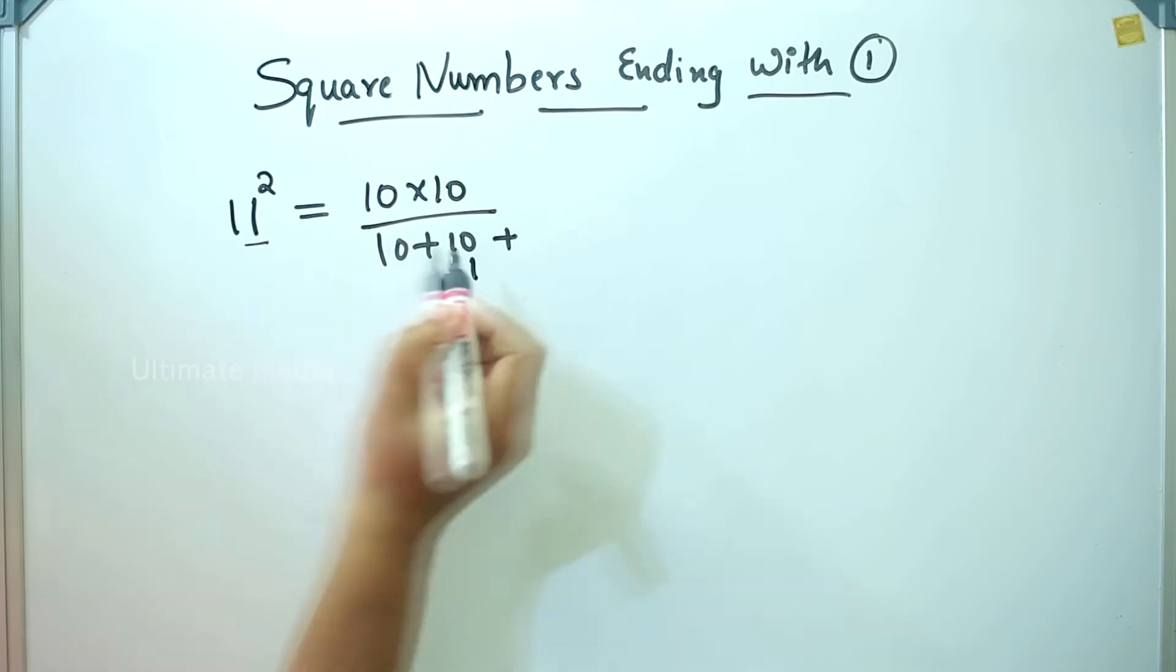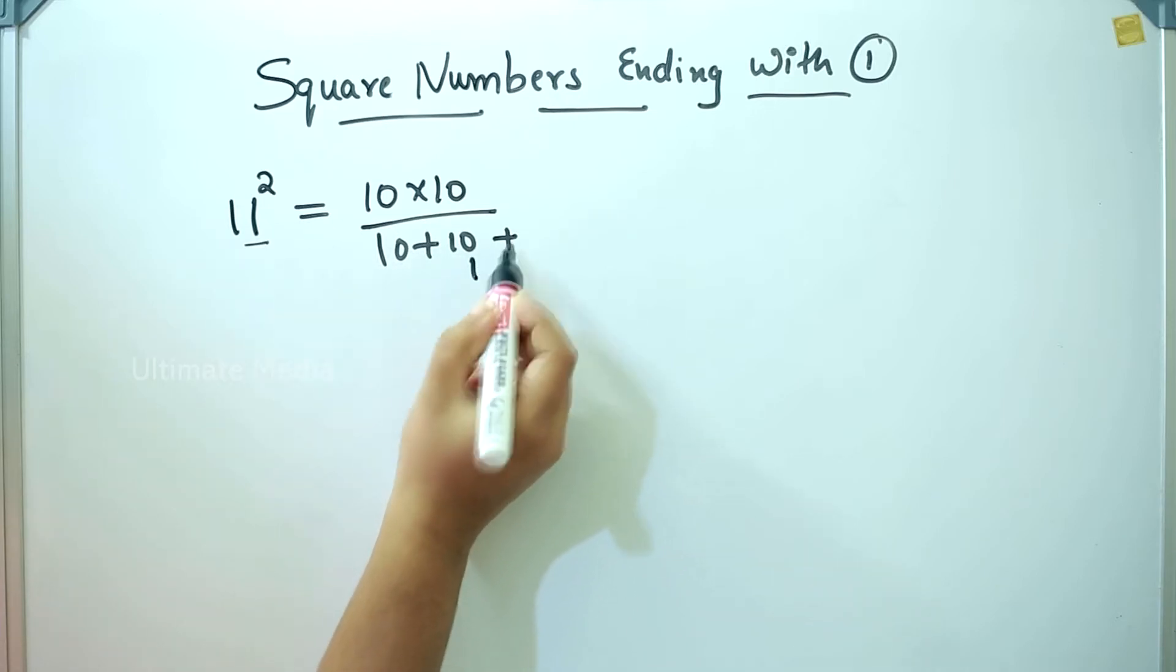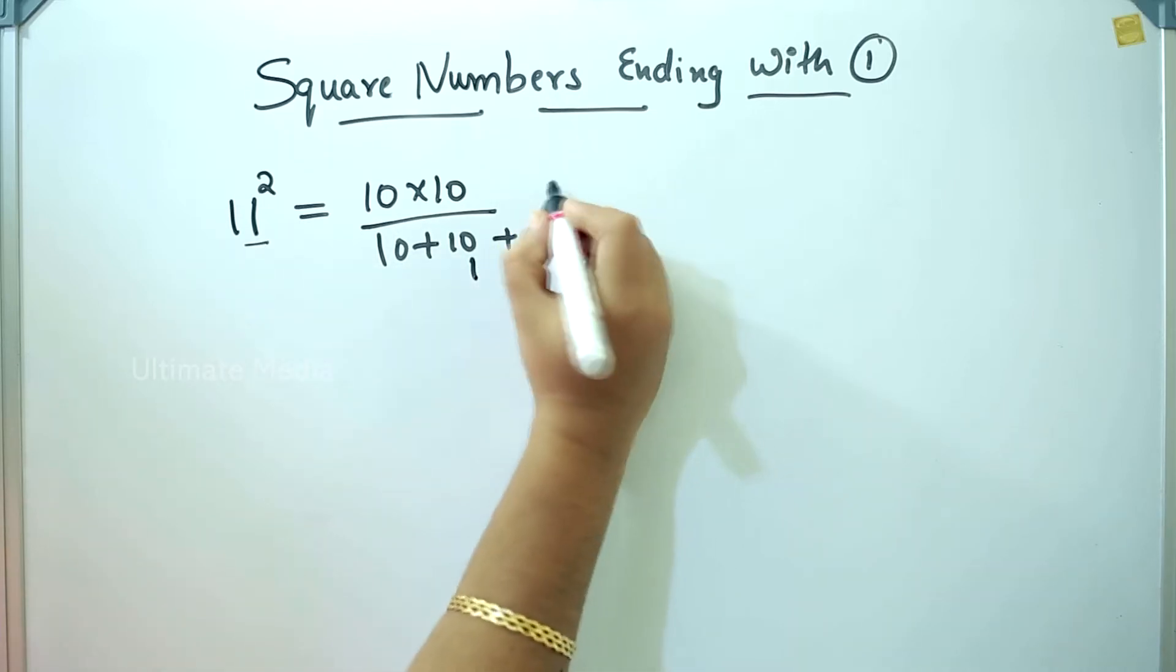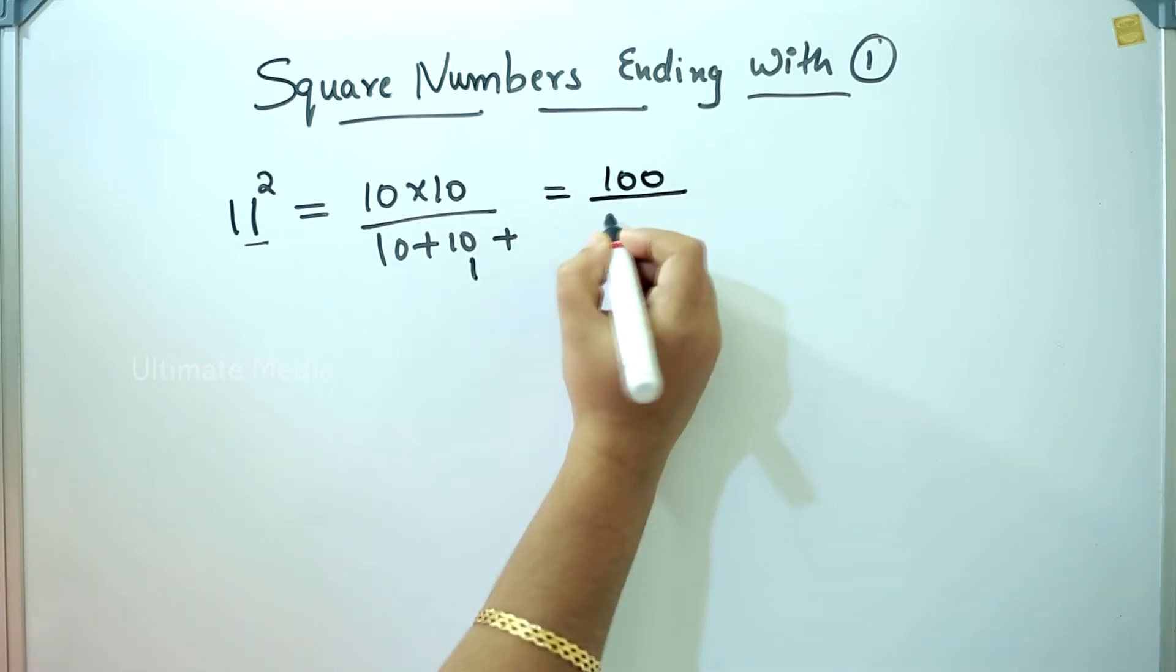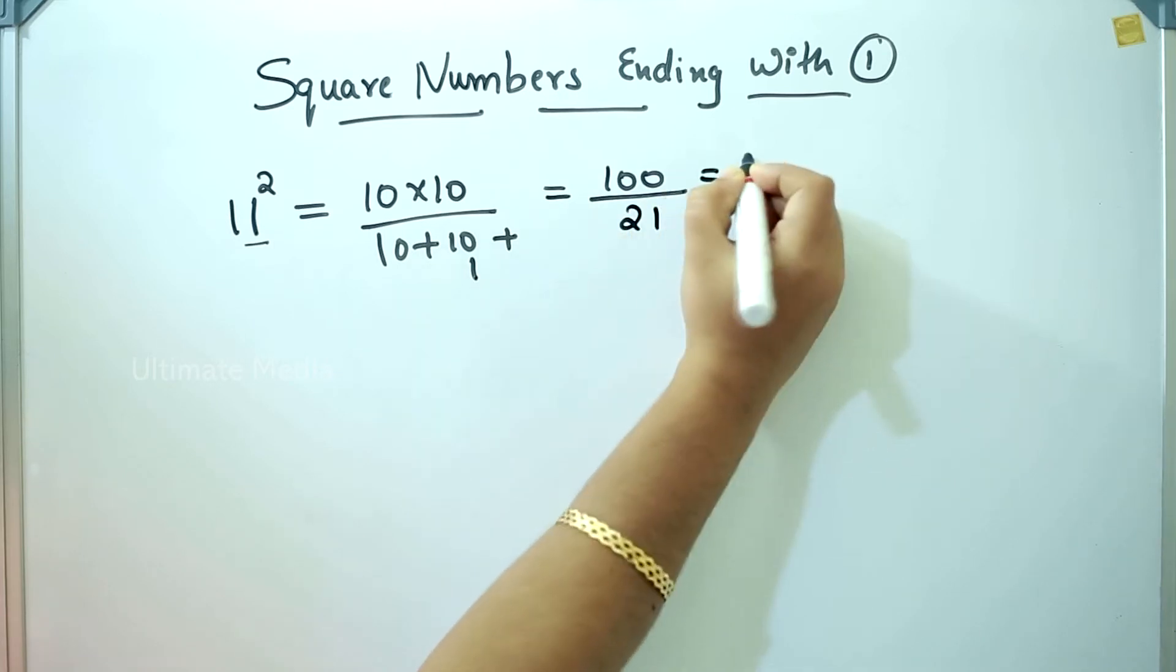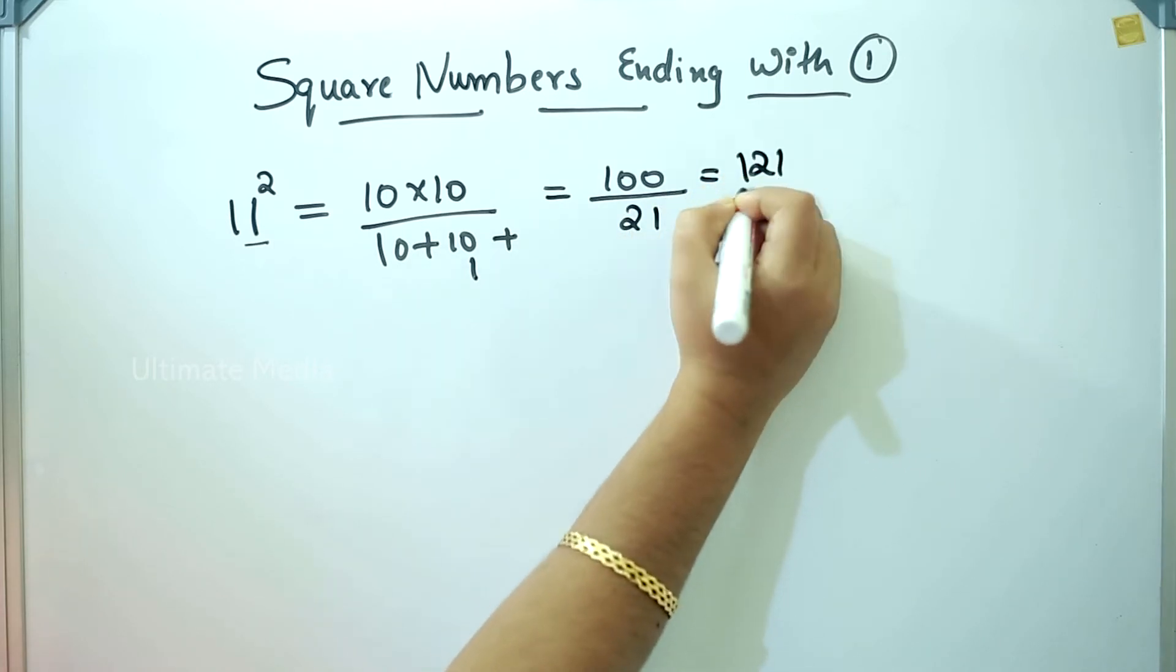Using this formula, we get 100 divided by 21. 10 plus 10 is 20, plus 1 equals 21. That will be 121.